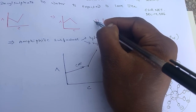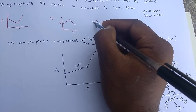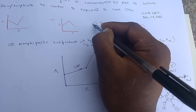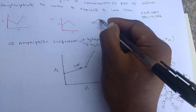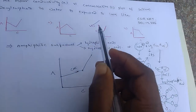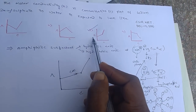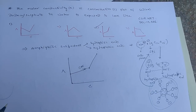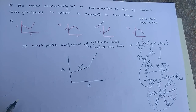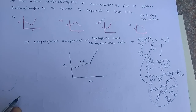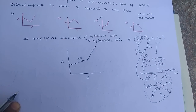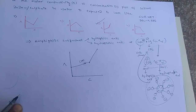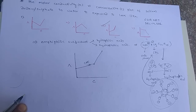The correct answer is the third graph for molar conductivity versus concentration of sodium dodecyl sulfate in water. If you like my videos, please subscribe to my channel and encourage me to upload more. Thank you.